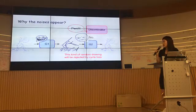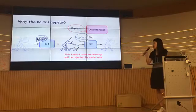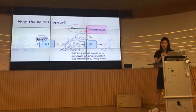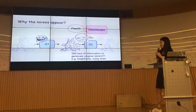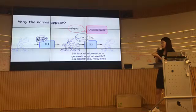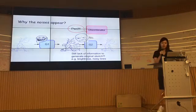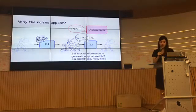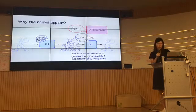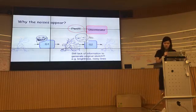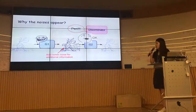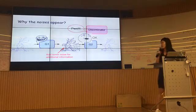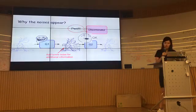Why does the noise appear? We thought random drawing would be rejected by cycle loss because generator 2 cannot reconstruct the original sketch from random drawing. But even with very clean line art input, generator 2 cannot reconstruct the original sketch because some noisy lines have already disappeared, and the clean line art does not contain any brightness. For natural pictures, preserving brightness may be beneficial, but in our case we need to erase all of it. So to satisfy cycle consistency loss, generator 1 adds some noise for additional information.